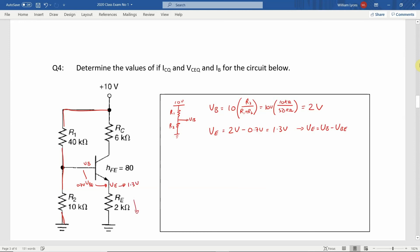We can now calculate the value of the emitter current IE. If we redraw this part of the circuit, we have the following: 1.3V going across the emitter resistance RE to ground. Using Ohm's law, we can calculate the emitter current IE by dividing the emitter voltage VE by the emitter resistance RE. This results in 1.3V divided by 2kΩ, and gives us an emitter current IE of 650μA.